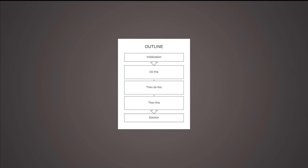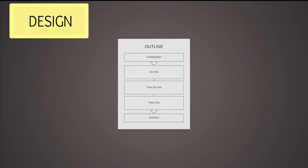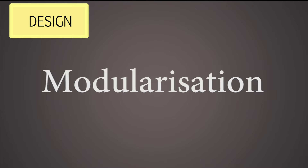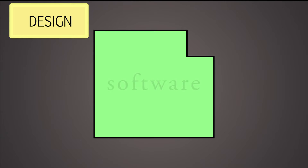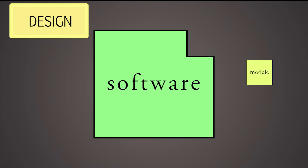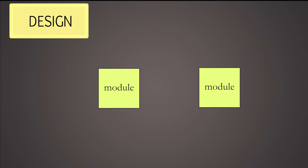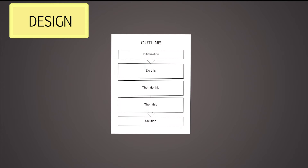After obtaining the requirements, software engineers can create an outline for a software system in the design phase, just like you would create a plan before writing an essay. To design effective software, a technique called modularization is used to split the software's system into smaller components, called modules, each executing a smaller subtask. Altogether, these modules work to execute the desired task.